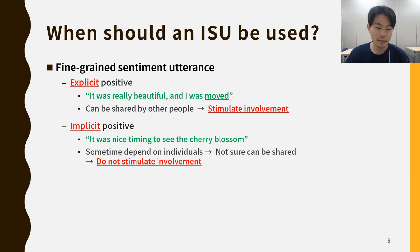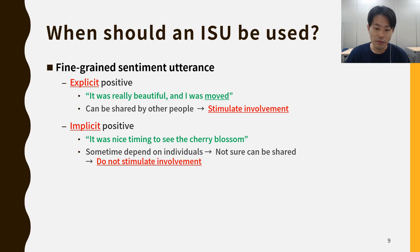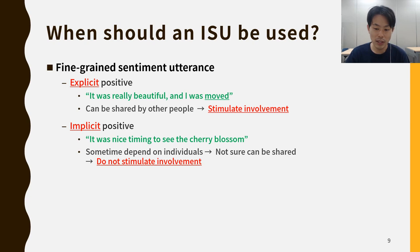However, there is a problem that needs to be solved. If we use the proposed ISU every time, it would be very annoying because the main speaker is interrupted by the system. In this study, we utilize fine-grained sentiment utterances. Compared to conventional sentiment analysis, we further divide positive labels into explicit positive and implicit positive. The example of explicit positive is 'it was really beautiful and I was moved' — here we can find the sentiment word 'moved,' so this is explicit positive. Since explicit positive can be shared by any people, we use ISU in this case. On the other hand, implicit positive sometimes depends on individuals, so we don't use ISU in that case.